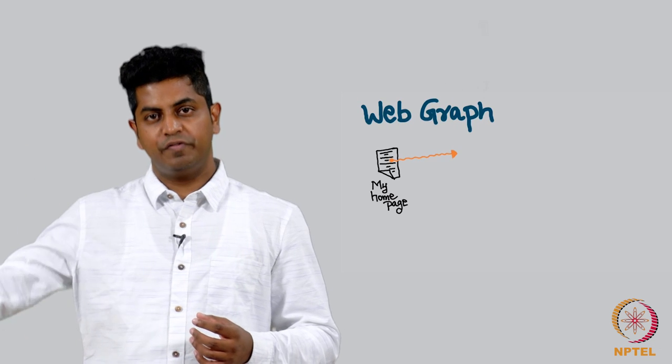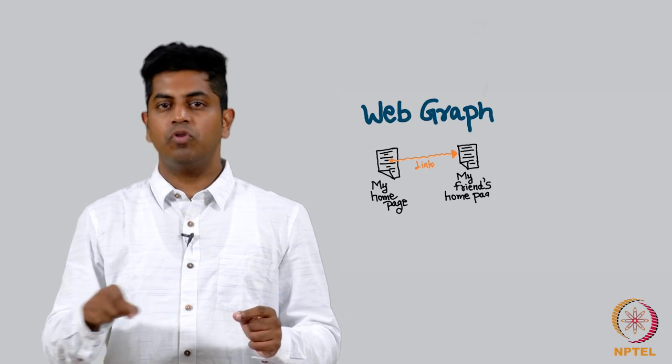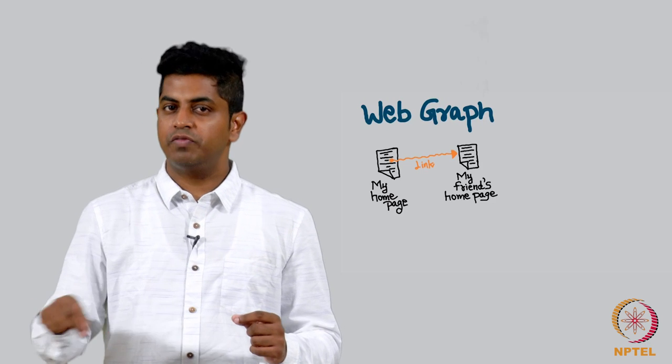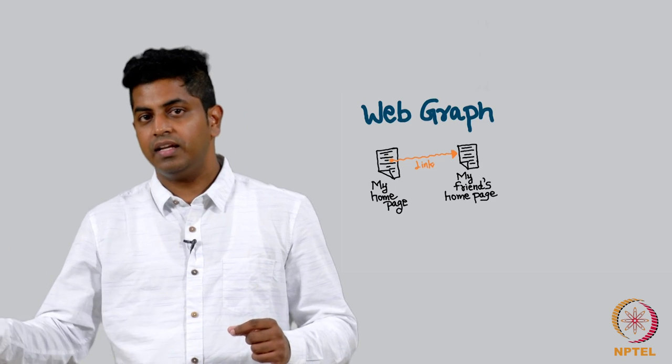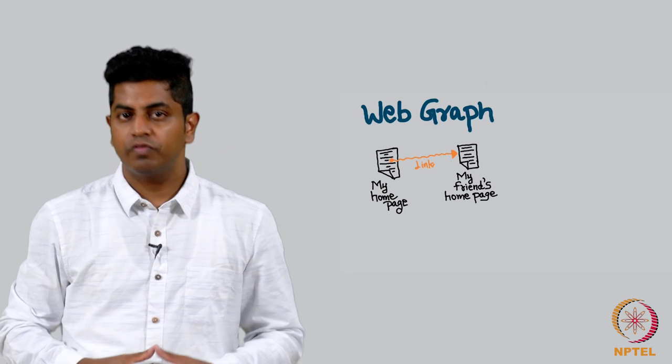The example is this: it is called the network of the world wide web, also called the web graph. What I do is the following - I have my home page and I link the home page of my friend on my home page. I say for more details about this course, please refer to my friend's website here, and that here is a hyperlink to the other web page. We have discussed this before if you remember.